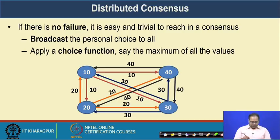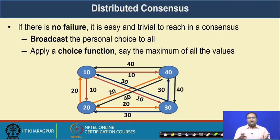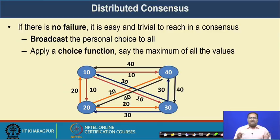Here are 4 nodes; individual nodes make a choice of 10, 20, 30, or 40 and inform their individual choices to all other nodes in the network. Whenever every node receives all the choices from all the neighbors, they can apply a max function to find out what is the maximum. So everyone will reach the value 40 if they apply the maximum function of all the received values.